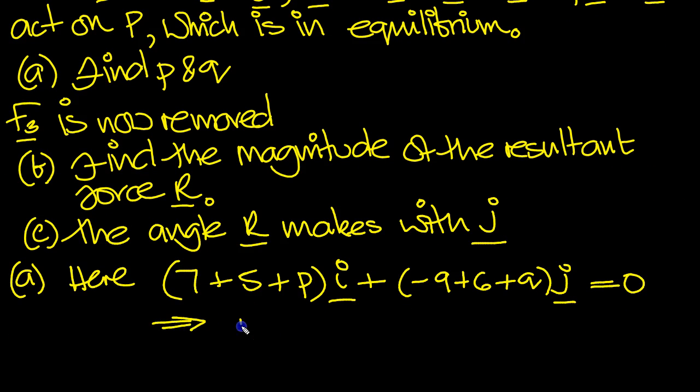So that tells us what p is. p must equal minus 12, for this to be 0, and q, this is minus 3, so q must be 3, for this to be 0.